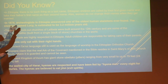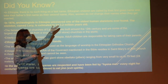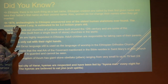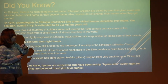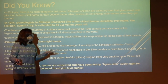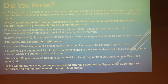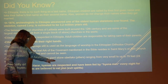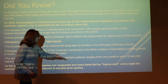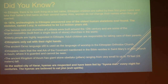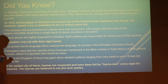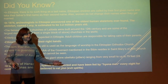In Ethiopia, there is no such thing as a last name. Ethiopian children are called by their given names, and then they take their father's first name as their second name. Also, when women get married, they don't change their names to their husband's name — they keep their names the same. The ancient kingdom of Axum has giant stones called obelisks — pillars ranging from very small to very tall. And in the walled city of Harar, hyenas are respected and have been fed by hyena men every night for centuries. Hyenas are believed to eat jen, which means evil spirits — that's the legend they have.